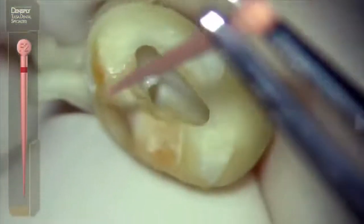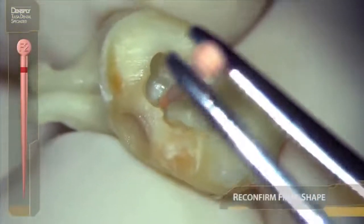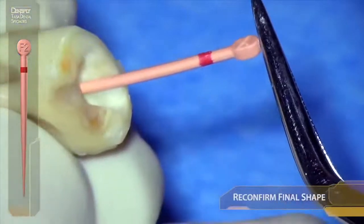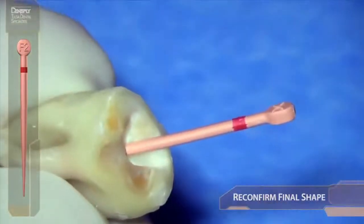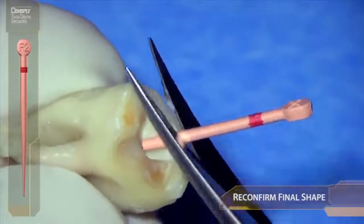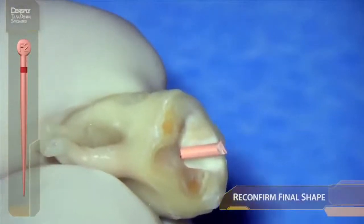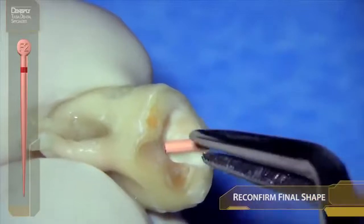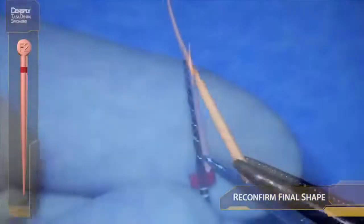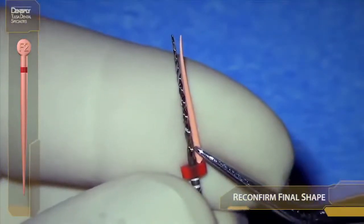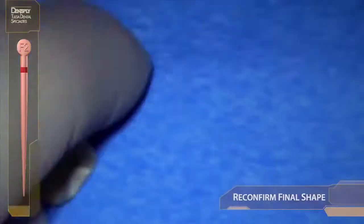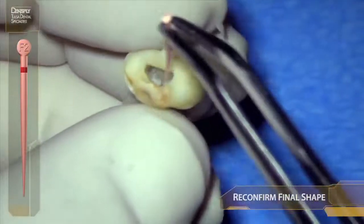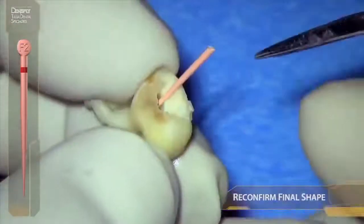When do we fit the cone? We fit the cone when we finish shaping. When do we finish shaping? When the flutes are filled with dentin. Special machine-molded gutta percha cones are followed to length, and we can check the apparent length against our finisher — it's quite close.